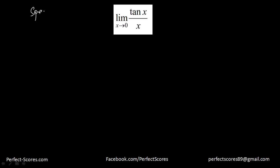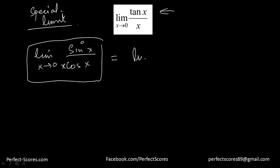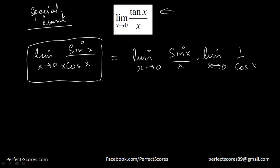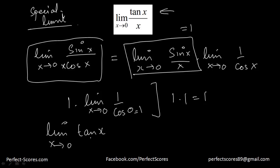Let us go ahead and do another special limit. Limit x tends to 0 of tangent of x over x. Tangent of x can be written as sin(x) over cos(x). So I am going to break this limit into limit x tends to 0 of sin(x) over x, times limit x tends to 0 of 1 over cos(x). The first part equals 1, and plugging in x = 0 gives cos(0) = 1. So this is 1 times 1 = 1, meaning limit x tends to 0 of tan(x)/x is equal to 1.